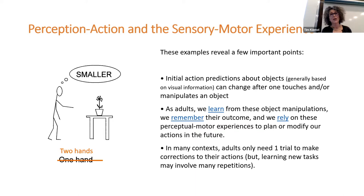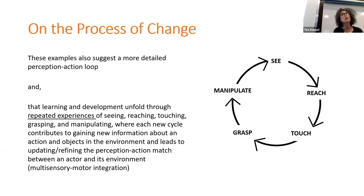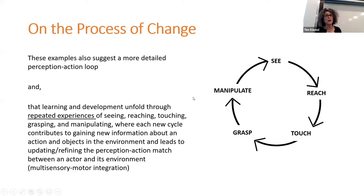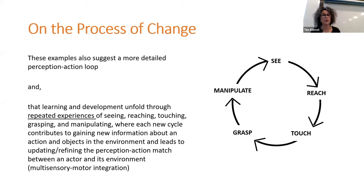Perception is actually a lot more complicated than just a simple perception-action pairing. There are many steps that matter in our exchange with the environment. For reaching: you look at the object, you reach, you touch, you grasp, you manipulate — but at every point in time you pick up novel information useful for building your next action plan. Learning and development unfolds through repeated experience of seeing, reaching, touching, grasping, and manipulating, where each cycle contributes to gaining new information and leads to updating and refining the perception-action match. What you have is multi-sensory motor integration, where all those levels come together to learn and fine-tune behavior.